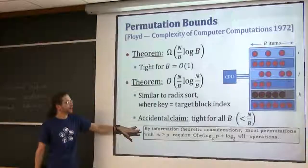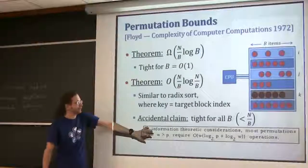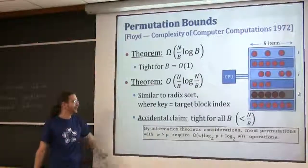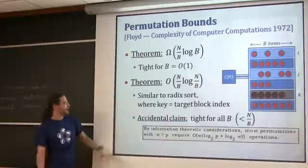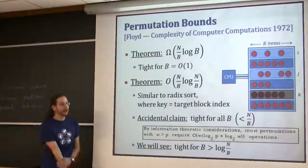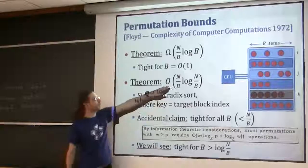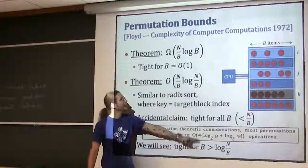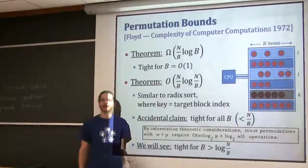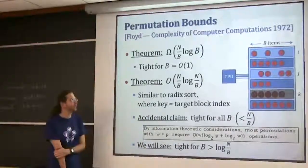The paper actually claims there's a matching lower bound - it says by information theoretic considerations this is also true. This is in the days when we didn't distinguish between big O and big omega. But this is not true, and we'll see that it's not true - it was settled about 14 years later. This is almost the right answer, but it doesn't quite work when B is very small. When B is 1, the right answer is N, not N log N.